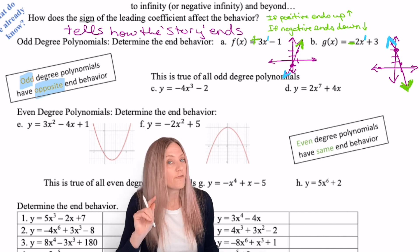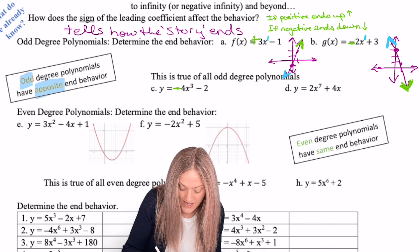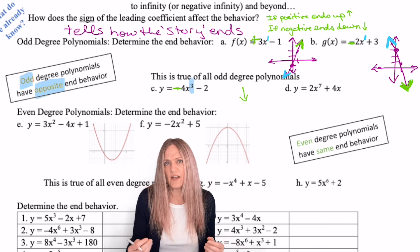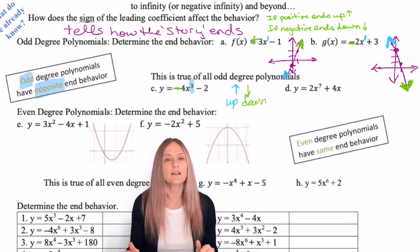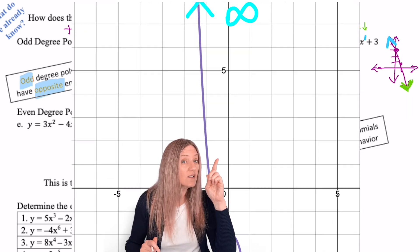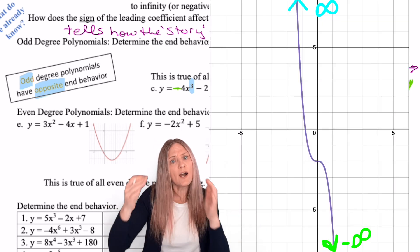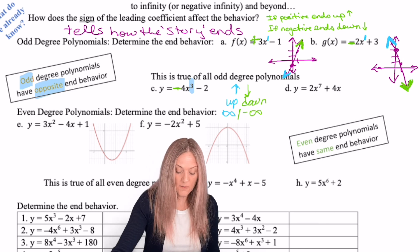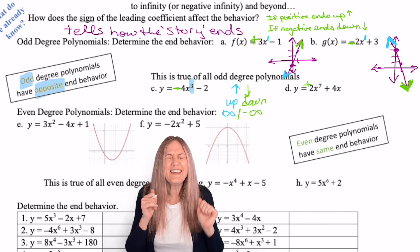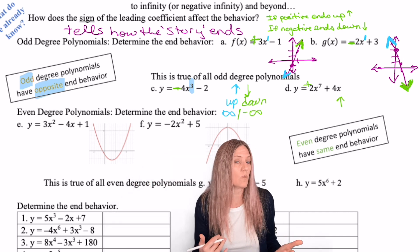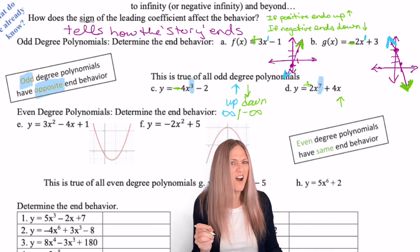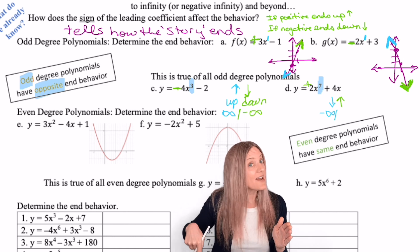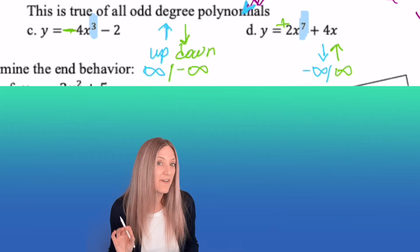Let's look at C and D. Example C has a negative leading coefficient, so the story ends down. The degree is three — three is odd, so that means opposite. If the story ended down, it had to start up. The outputs going towards infinity on the left end, and towards negative infinity on the right. Example D: the leading coefficient is positive, so it ends up. The degree is seven — seven is odd, so opposite: it started down, meaning outputs were going towards negative infinity. Ending up means outputs go towards positive infinity. Let's verify by looking at the graphs — it worked.